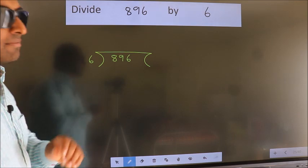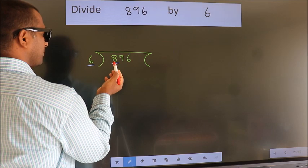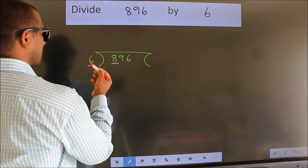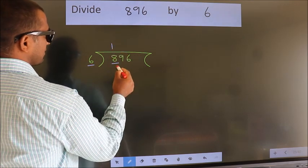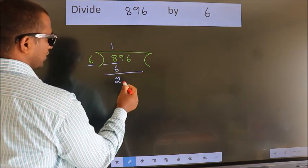Next, here we have 8, here 6. A number close to 8 in the 6 table is 6×1=6. Now we should subtract. We get 2.